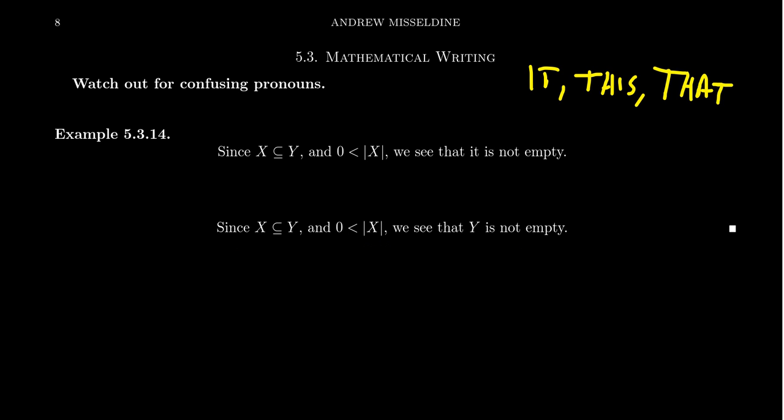Instead of using words like it, just spell it out. Like in this case, it versus Y, it really doesn't make the sentence any longer. Like you look at those periods, they look lined up right there. But one removes all confusion whatsoever. So be in that habit of being more explicit in your language and only use pronouns when the confusion is avoidable.